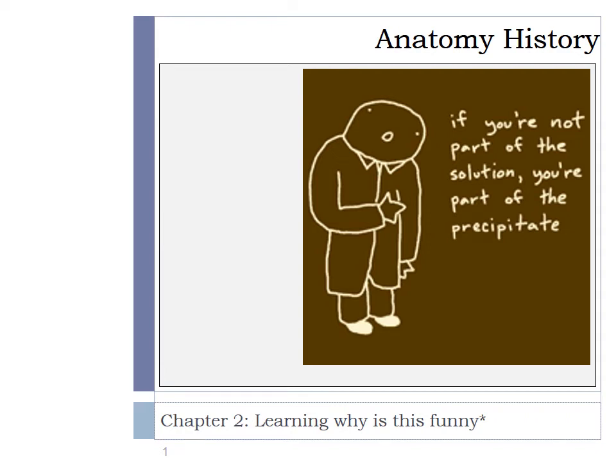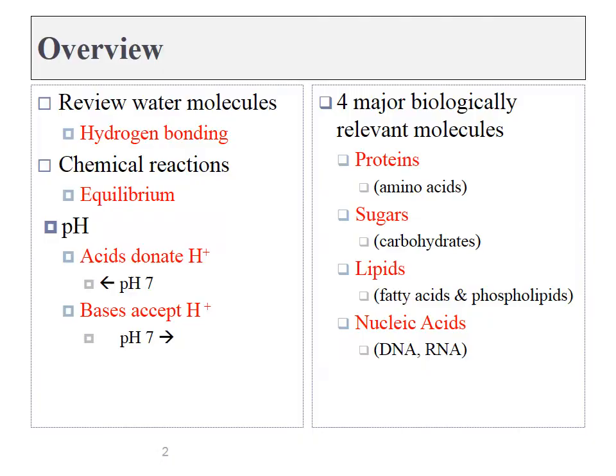Chapter 2, Chemistry Review. We need to review just enough chemistry to get through the ANP series. I'll cover pH, some basics of chemical reactions, and the four major types of molecules found in the human body.